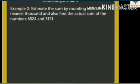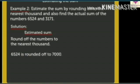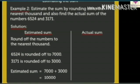Let us solve one more example. To estimate the sum, round off the numbers to the nearest thousand. 6524 is rounded off to 7000, and 3171 is rounded off to 3000. The estimated sum is 7000 + 3000 = 10,000. The actual sum is 6524 + 3171 = 9695.